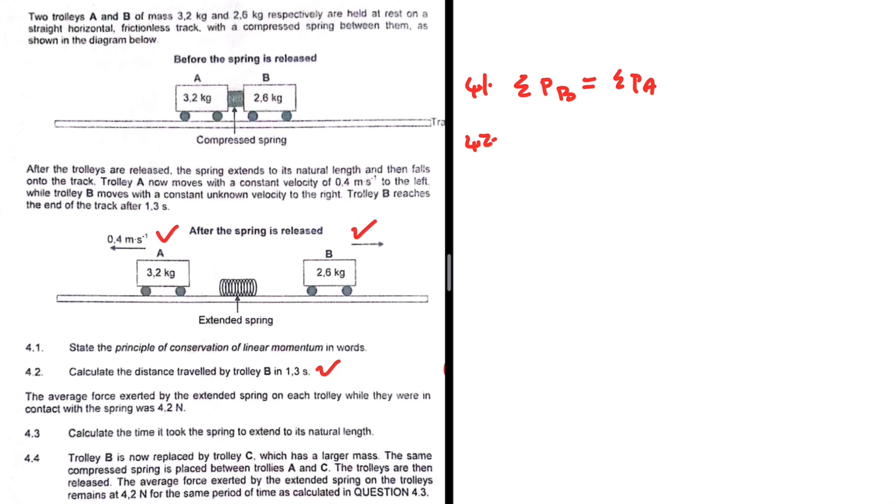So let's take a look at 4.2. We're supposed to calculate the distance traveled by trolley B in 1.3 seconds. The mark allocation is five marks. So 4.1, I had to state the principle of conservation of linear momentum, so my guess is that I'm gonna have to use it in 4.2, right? But then the question is a bit tricky—it says calculate the distance.